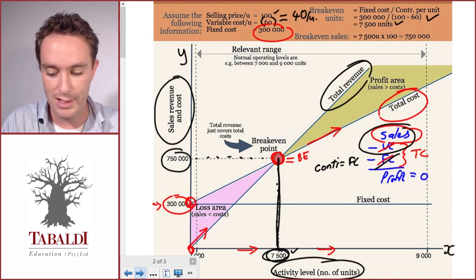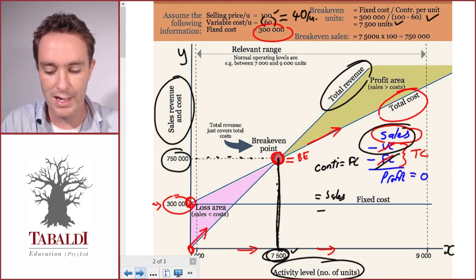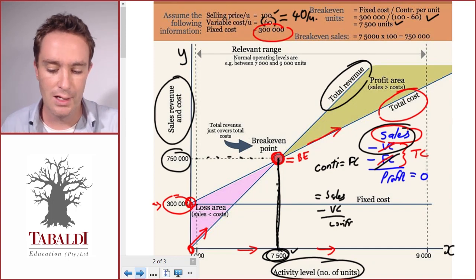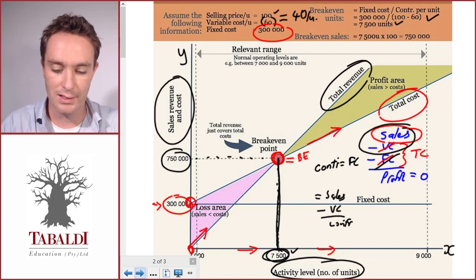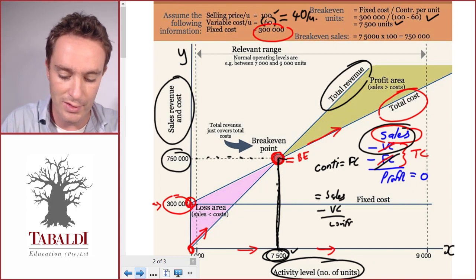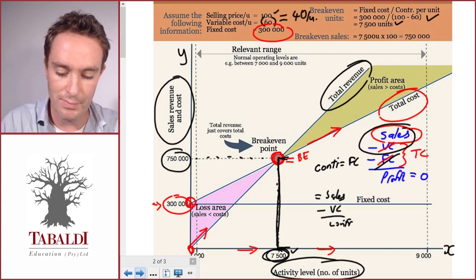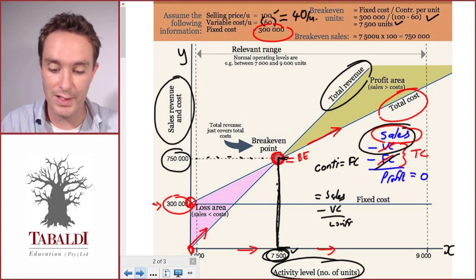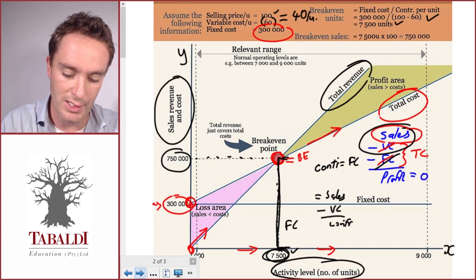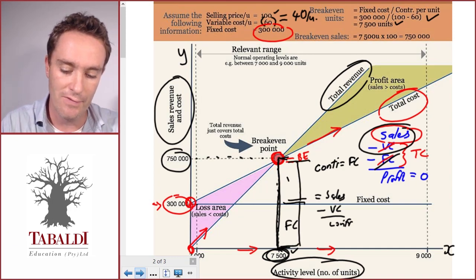How do we calculate total contribution? Remember, contribution is our sales minus our variable costs. What is our variable cost here? Total cost is this distance up to the dot there. Our variable cost must then be our total cost less our fixed cost.